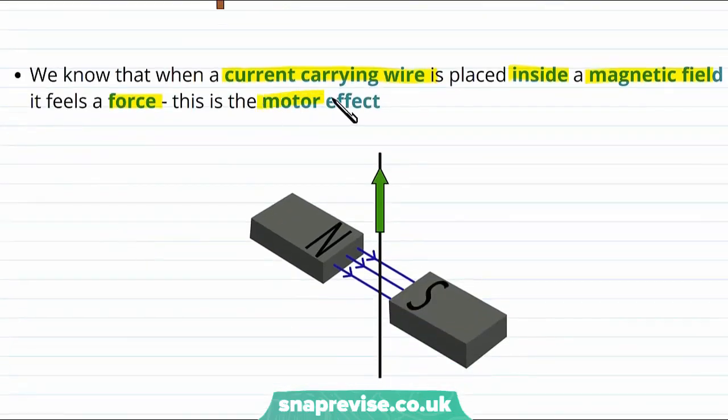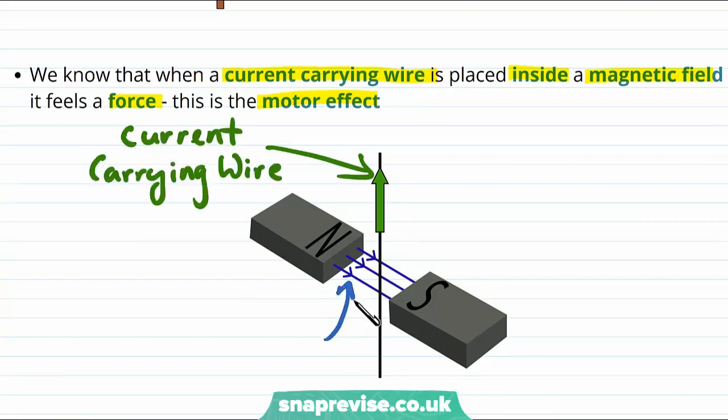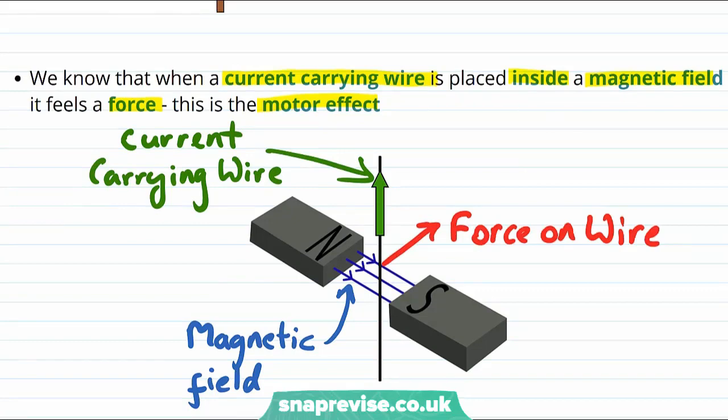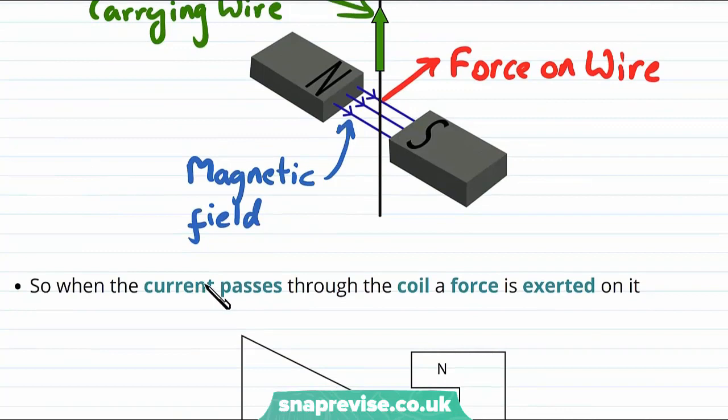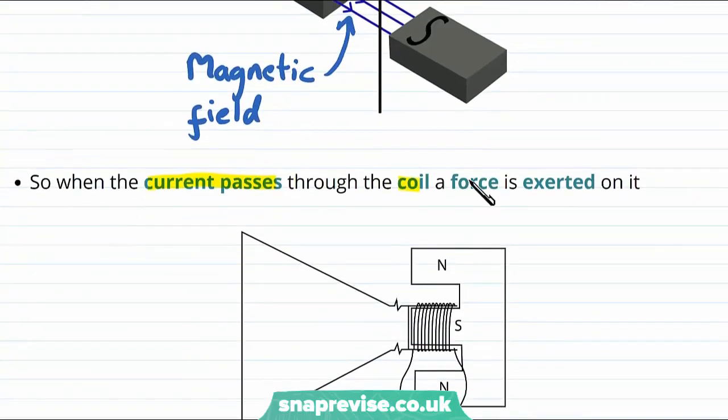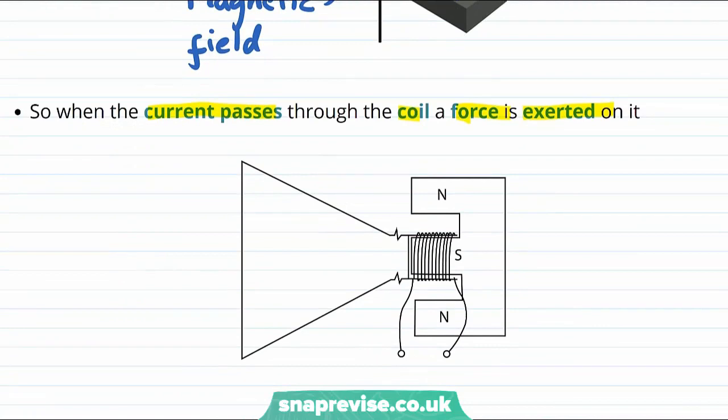We know that when a current carrying wire is placed inside a magnetic field it feels a force. This is the motor effect. So for example here is a current carrying wire, here is our magnetic field, and as a result of this current and magnetic field there is a force on the wire. Now our coil of wire is wrapped around a magnet so it's certainly in a magnetic field. And when current passes through this coil a force is going to be exerted on it. Current comes in through the wires in some direction, this current is flowing around the coil, and as a result there is a force on the coil.